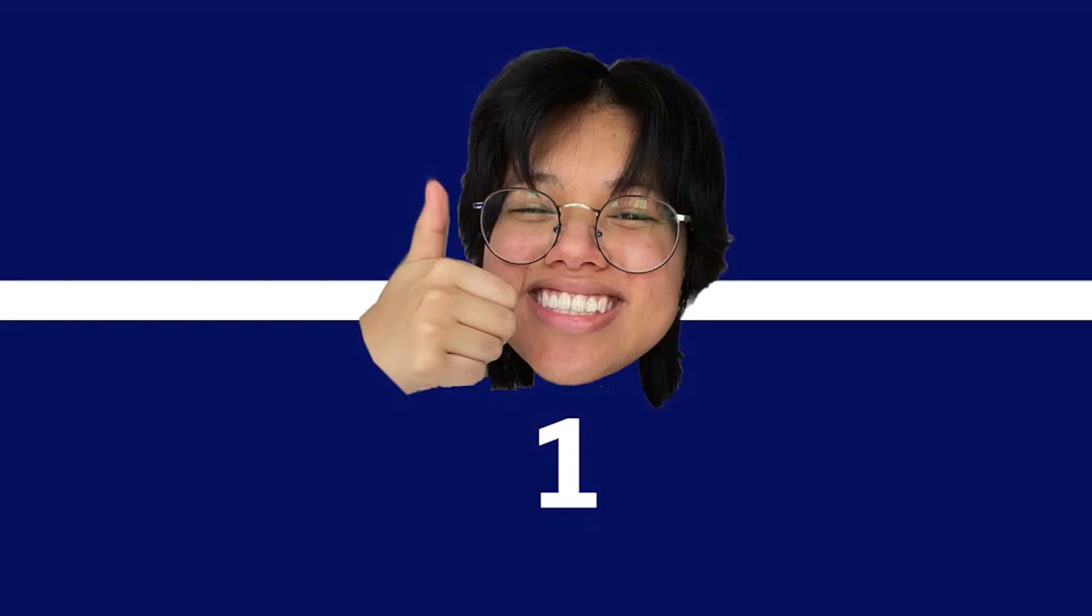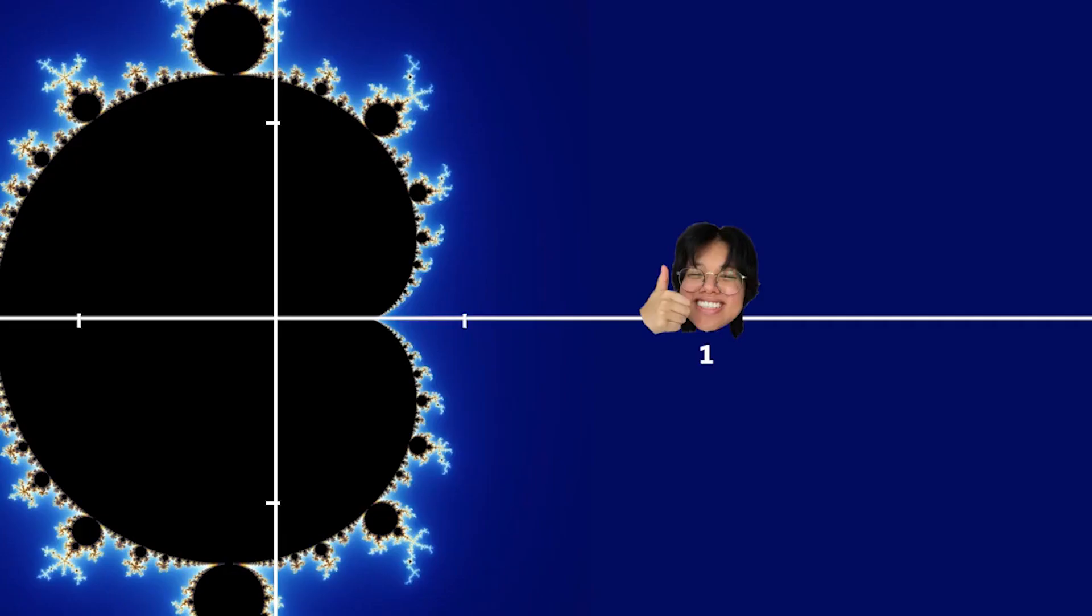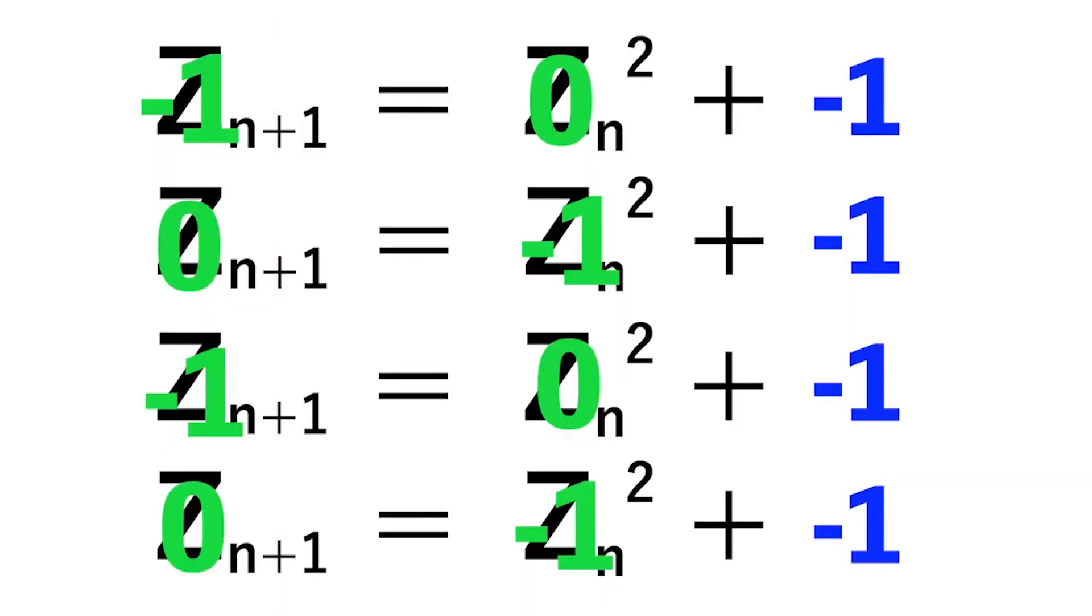Plug it in again, you get the point. If the values blow up to infinity, it's not in the fractal. Since this value of c does that, it's outside of the set.